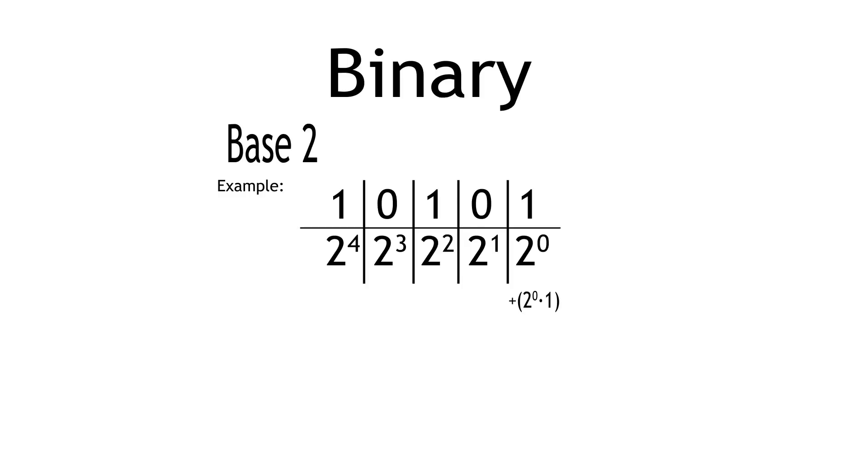We then add this to the following product, 2 to the 1 times 0. This is then added to 2 to the 2 times 1, and so on until we've reached the leftmost digit of the number.